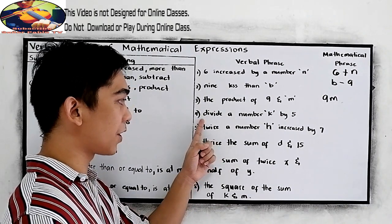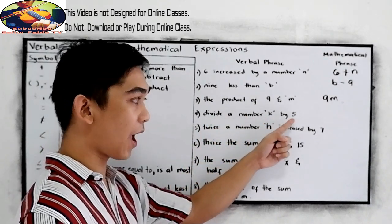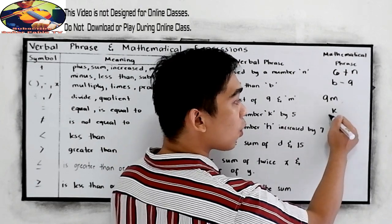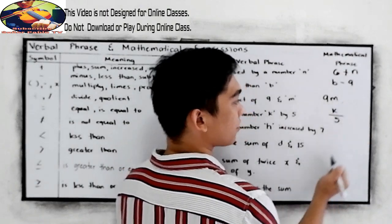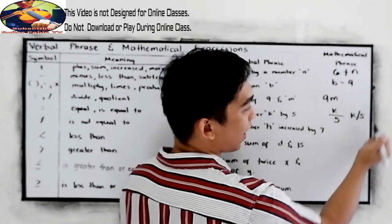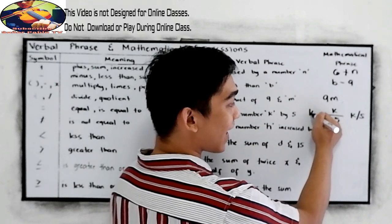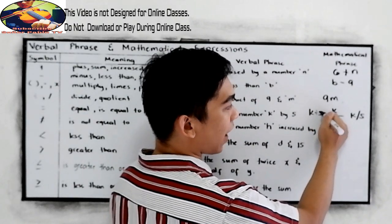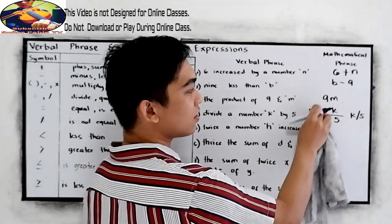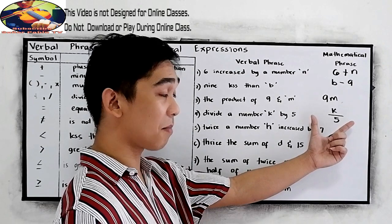Next, number four. Divide a number k by five. So k, we are going to divide by five. Or it can be k slash five, or k divided by five. So, those are the different ways to write in mathematical phrase.